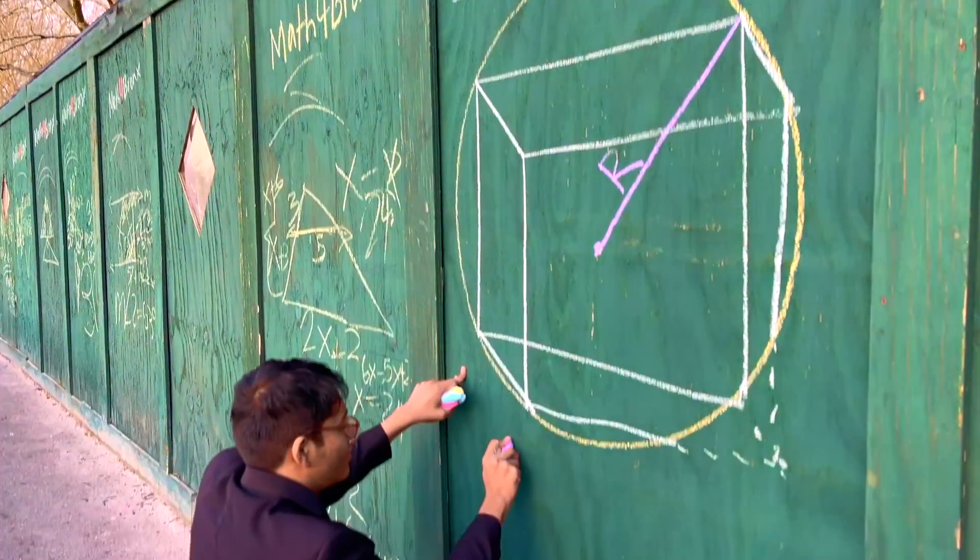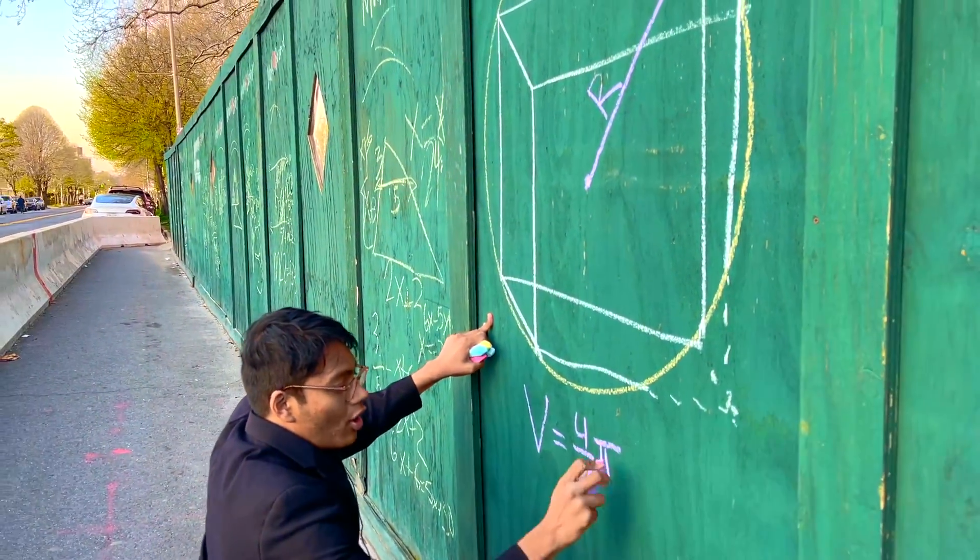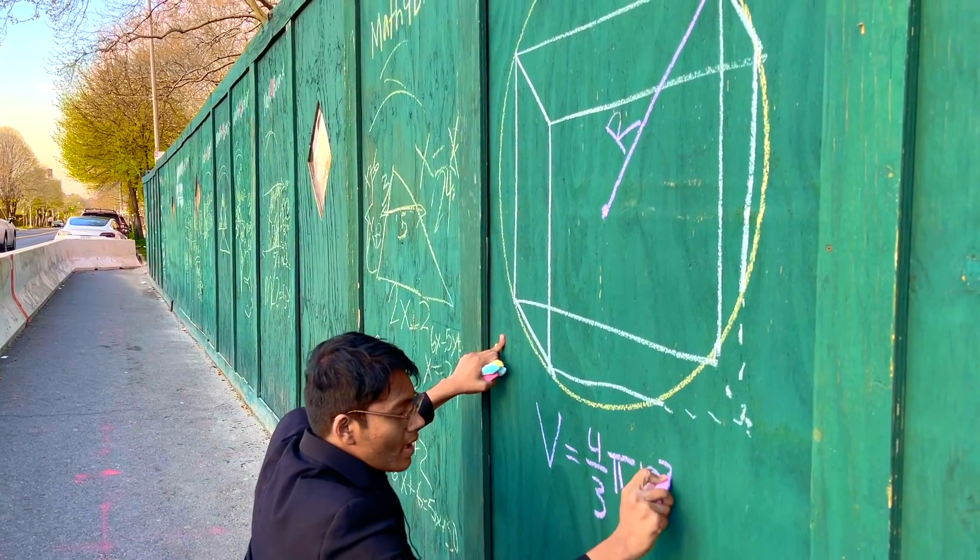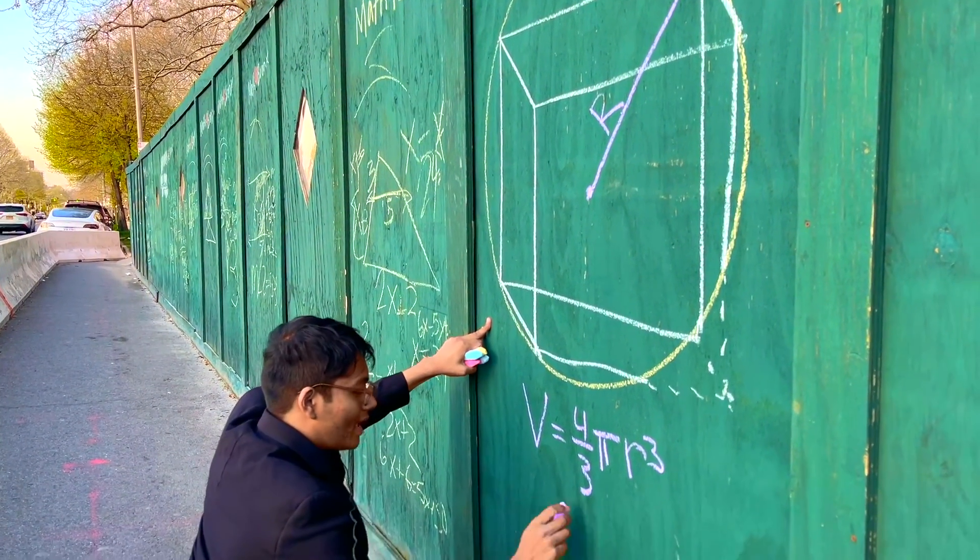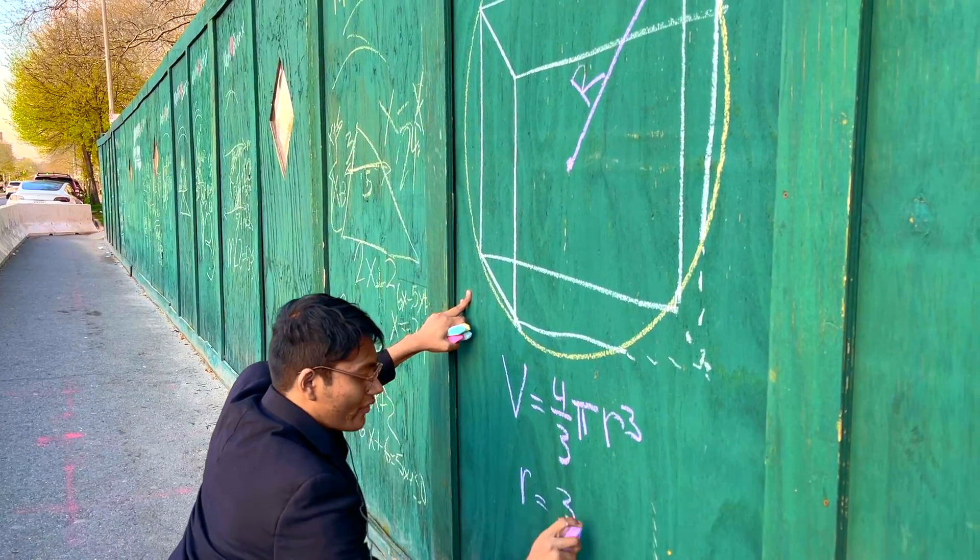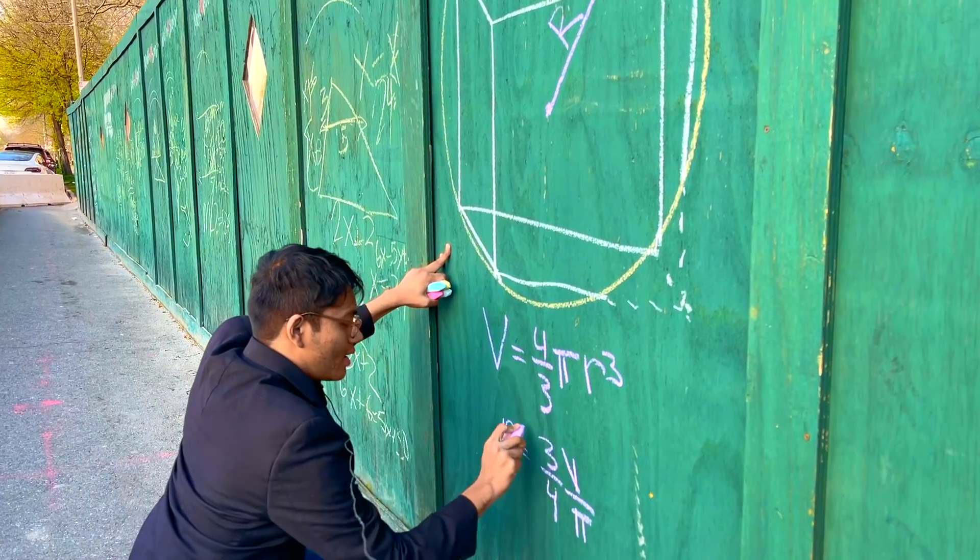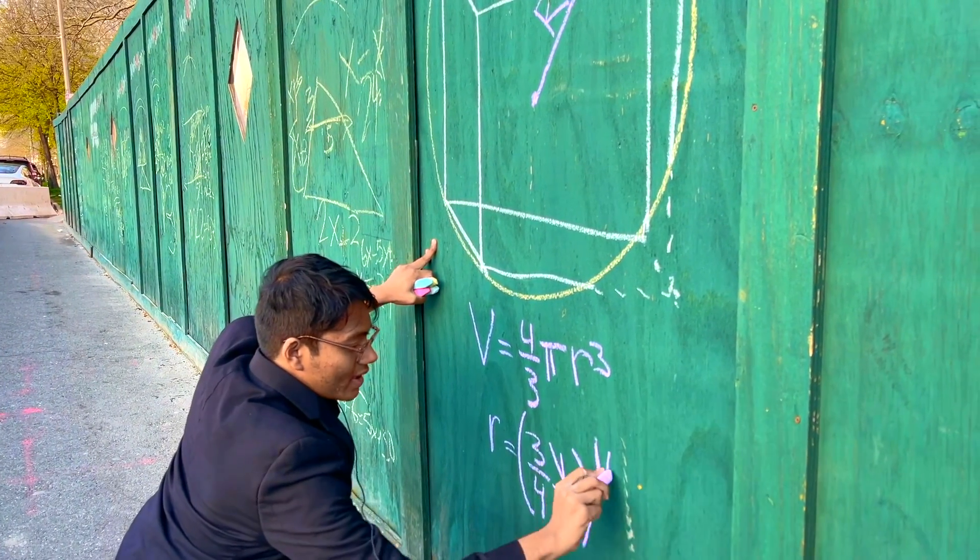Well, we know that the volume of the sphere is given as 4 thirds pi r cubed. Solving for r, we get r is equal to 3 fourths of whatever the volume is, v, over pi, and we take the 1 third power of this.